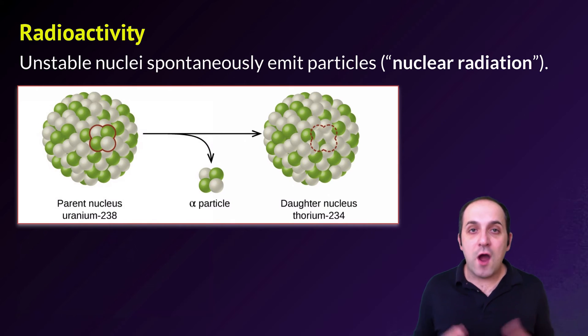So when nuclei are unstable, they're going to emit particles. And we're going to call those particles nuclear radiation. Radiation is just a term for energy, and there's a lot of different forms of energy, as we've already learned. In our next unit, we'll talk about electromagnetic radiation, which is a totally different kind of radiation than this radiation. But this is nuclear radiation. It's radiation that comes from the nucleus.